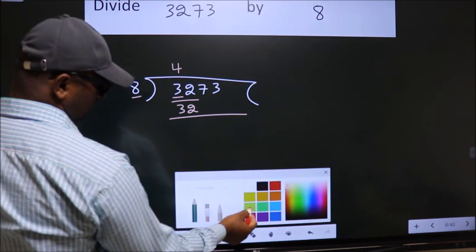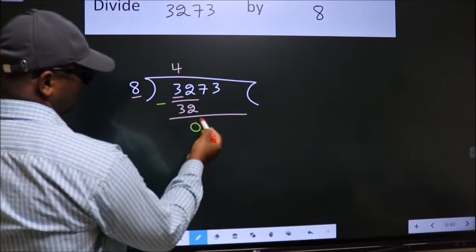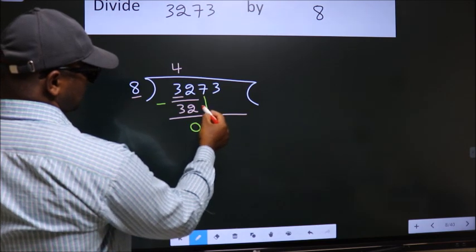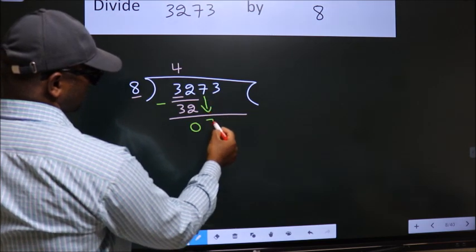Now we should subtract. We get 0. After this, bring down the beside number. So, 7 down.